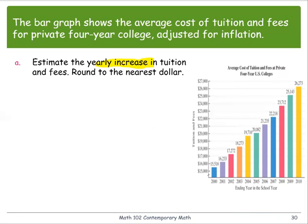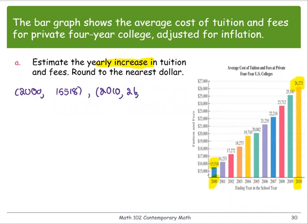We're going to look at two data points. The first one from year 2000, which has the tuition and fees as $15,518. And the year 2010, the tuition and fees is $26,223. So let's write them as two ordered pairs: (2000, 15518) and (2010, 26,273).